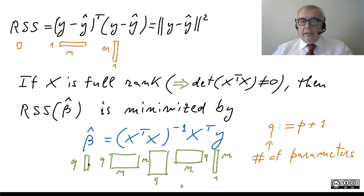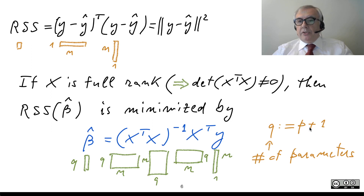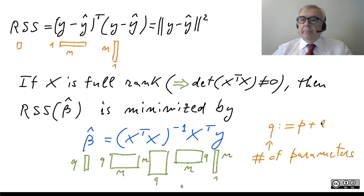Here you can check that all the dimensions are correct. I introduce Q, defined as P plus 1 — so Q is the number of parameters to be estimated. The predictors are P, but we have also a further parameter beta-zero, the constant term, so the overall number of parameters is P plus 1.